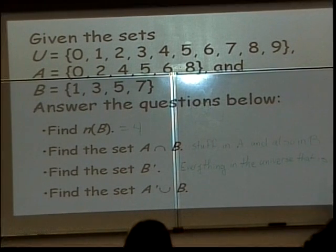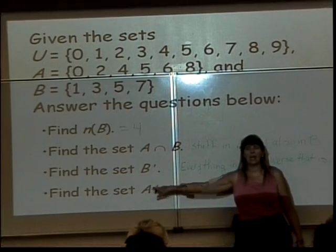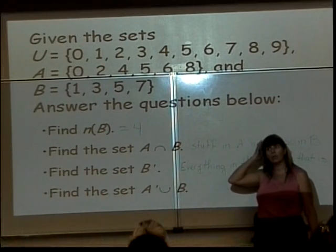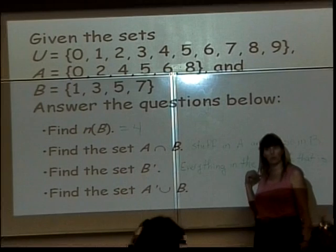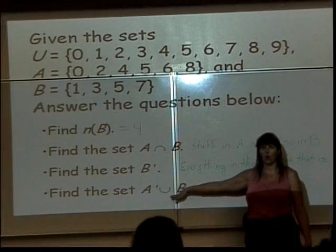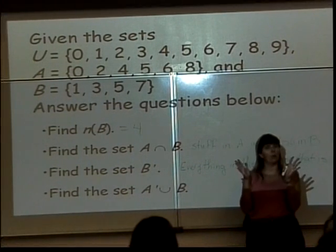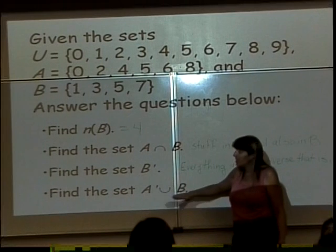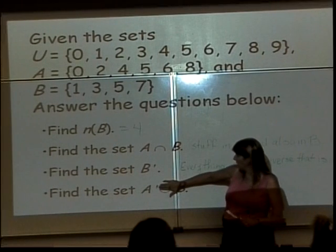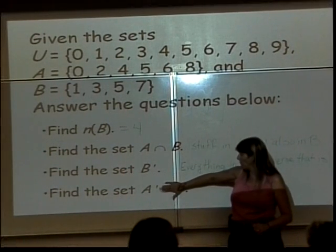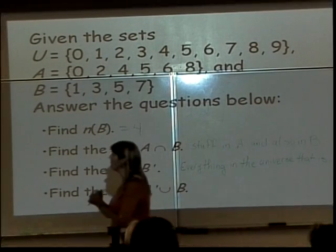Find A complement union B. So this is A complement or B. In other words, the way you think about this is, these are the things that are in A complement or in B or in both sets at the same time. So chances are your ors are going to get bigger. Your ands are usually smaller. Not always, but sometimes. I personally consider this a two-step problem. So step one is to ignore the or B part and do just the A complement.